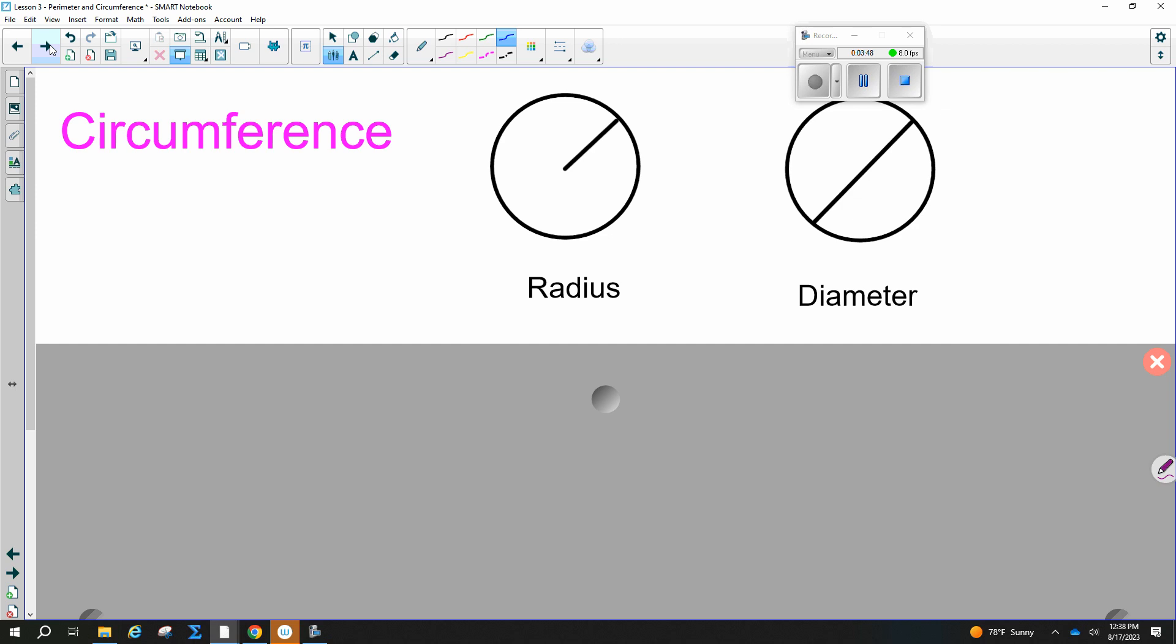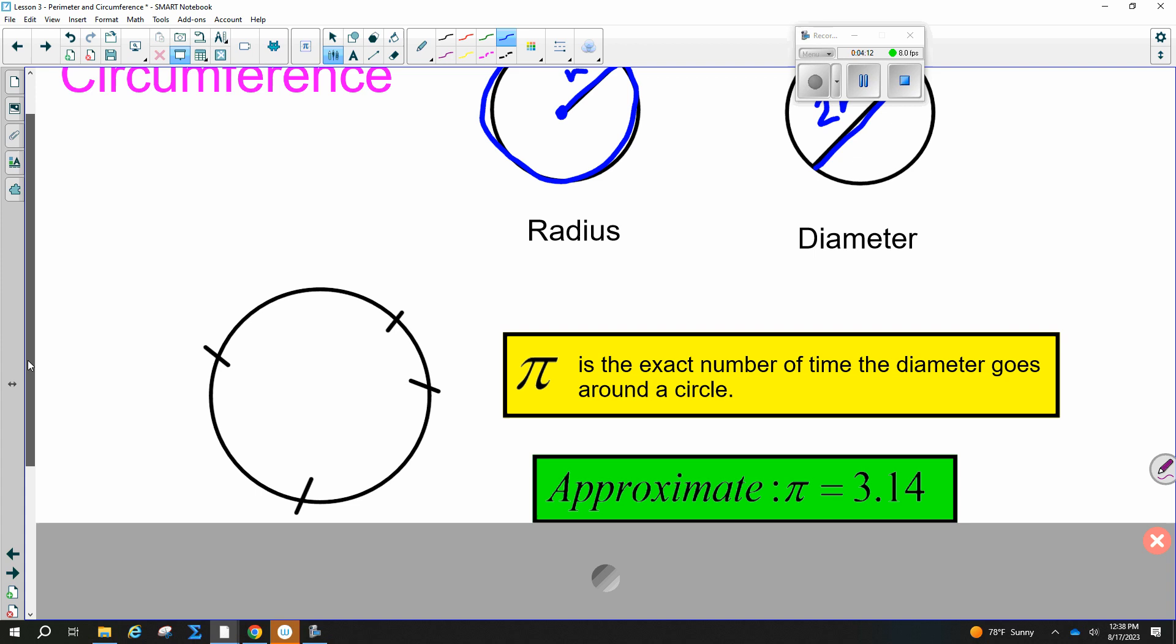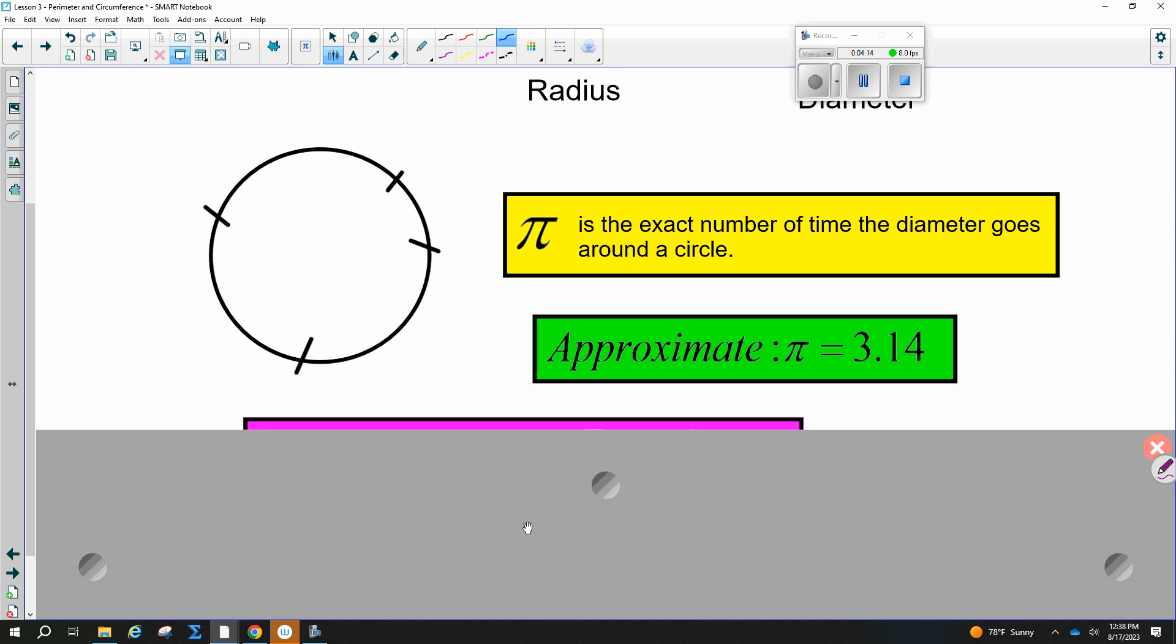Circumference is similar to perimeter, only it's for a circle. So we're just adding up the length of the distance around the circle. And so this little distance from here to here is the radius, and this distance from here to here is the diameter, which is always twice the radius, which you guys probably remember from pre-algebra.